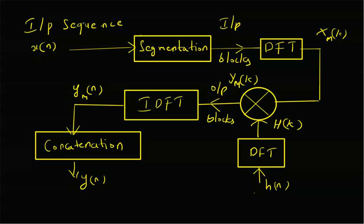Hello, welcome. In this short video, let us look at the overlap-add method for long data filtering, that is linear filtering of long data sequences. This is the block diagram for filtering of long data sequences. We have the input data, then we do segmentation to get uniform sized blocks, apply DFT, multiply with H(k) the DFT of the impulse response of the filter, get output blocks in frequency domain, apply IDFT, and then apply concatenation to get the final output. Now let us look at the overlap-add method for this segmentation and concatenation.